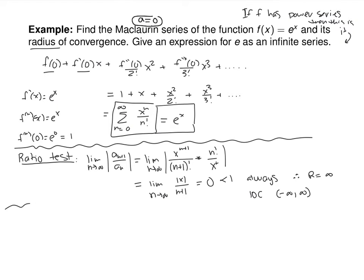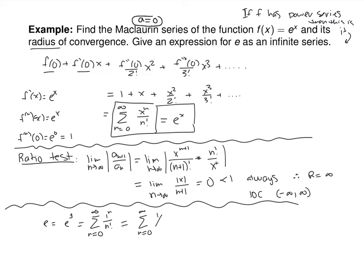If we can say this power series representation equals e to the x, it lets us approximate various values of e using an infinite series. For example, e equals e to the first, so we plug in 1 for x: the sum from n equals 0 to infinity of 1 to the n over n factorial, or just the sum of 1 over n factorial. You could approximate e by finding a partial sum — add up 1 over n factorial from 0 to 10, 20, or 1000, and you'll get a decimal approximation approaching 2.71... the more terms you add.